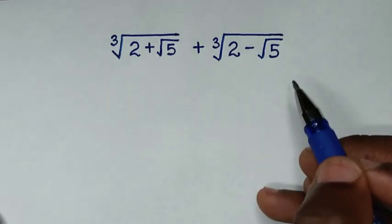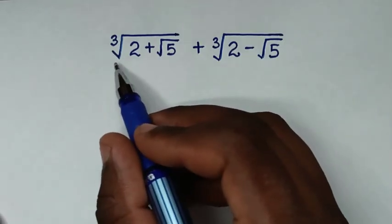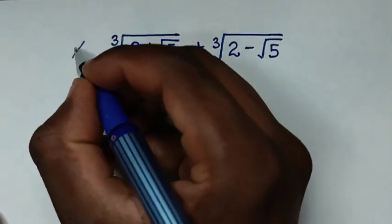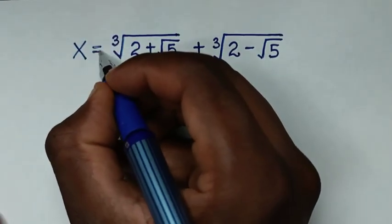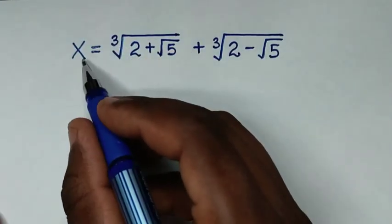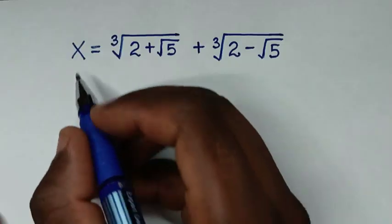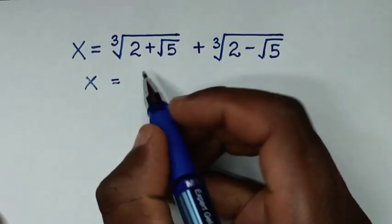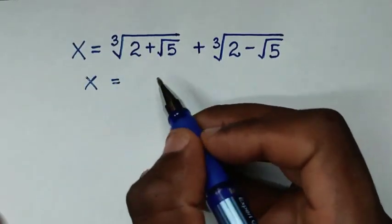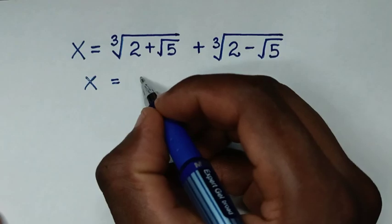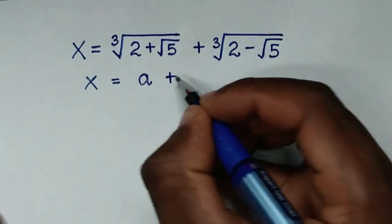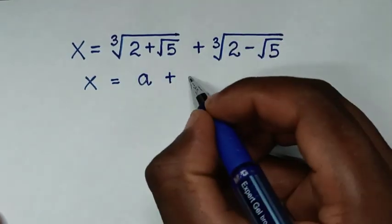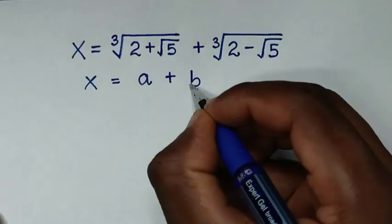In the first step, this addition of cube roots we let x, so we'll be finding the value of x. Then x is equal to cube root of 2 plus square root of 5, which we let a, plus cube root of 2 minus square root of 5, which we let b.